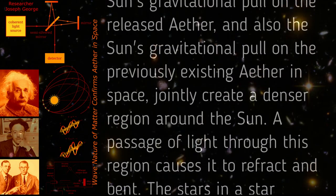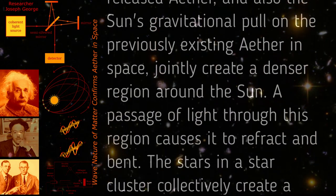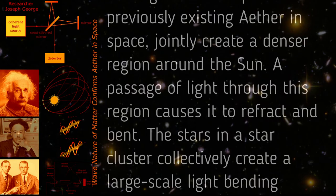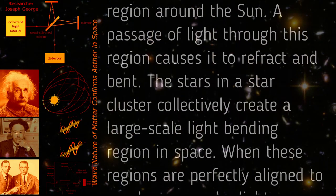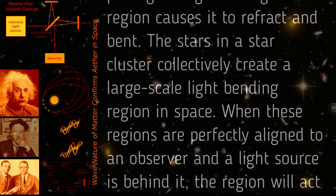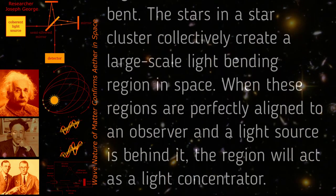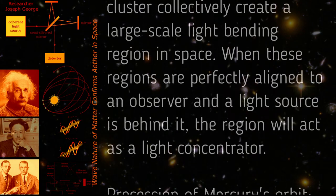The stars in a star cluster collectively create a large-scale light bending region in space. When these regions are perfectly aligned to an observer and a light source is behind it, the region will act as a light concentrator.